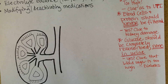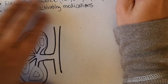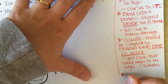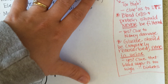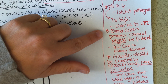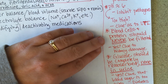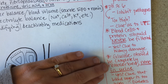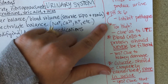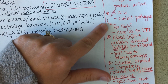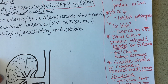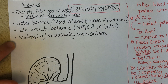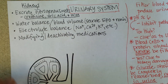So that's our little bit of background — some take-home ideas that we'll come back to over and over again about what should never be filtered, what should be completely reabsorbed, the purpose of acidic urine, and the four primary jobs of the kidneys.